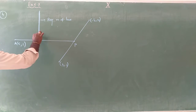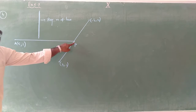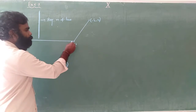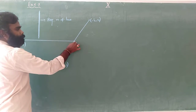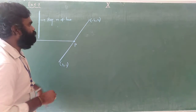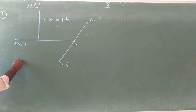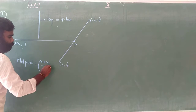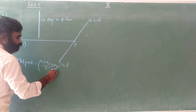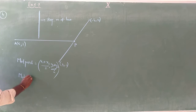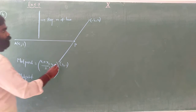This line is perpendicular to AP, where point A is given but point P is not directly given — P is the midpoint of the two given points. So I need to find the midpoint P. The midpoint formula is: midpoint = (x1 + x2)/2, (y1 + y2)/2.